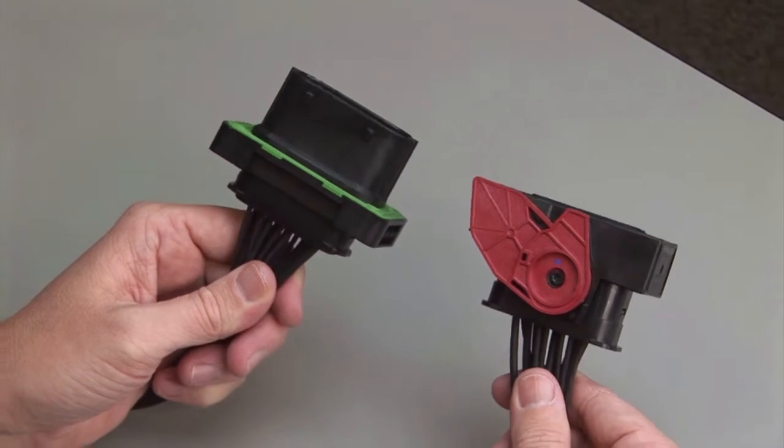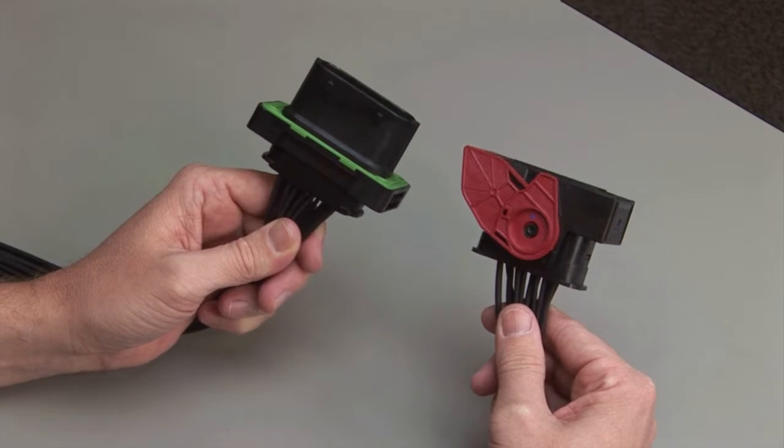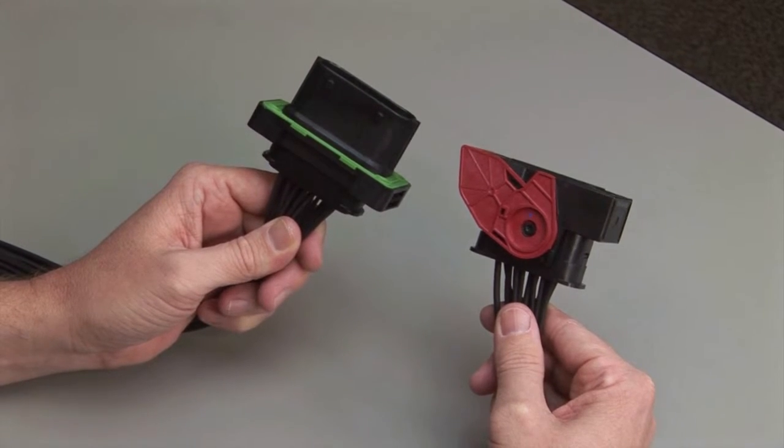Repeat the same process for the receptacle and the plug halves of the connectors. Make sure to insert the contacts into the rear grommet or wire router.